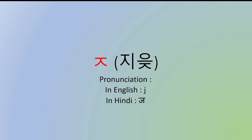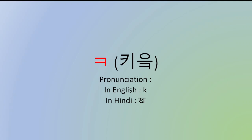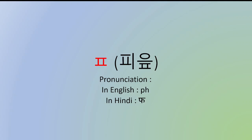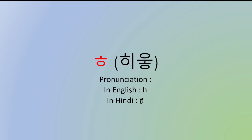Next we have ㅈ — ja. After this is ㅊ — cha. Then we have ㅋ — kh. Aap iski formation dek sakte ho — capital F jo hota hai English ka, uska ulta, a mirror image of that. Then we have ㅌ — tha. Then we have ㅍ — tha or tha. Ye similar hai capital E ke formation mein. Then we have ㅍ — ph. May ne likha ph hai lekin iska pronunciation similar to 'ph' hota hai. Then we have ㅎ — ha.